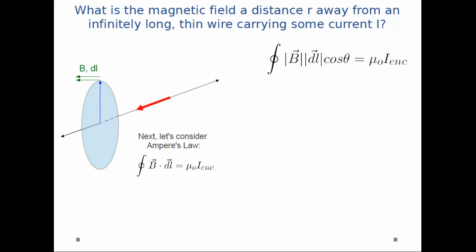I notice in this case, if I use my right-hand rule, B and DL are pointing in the same direction at every point along the circle. So the angle between them must be zero. And so, cosine of zero is just one.